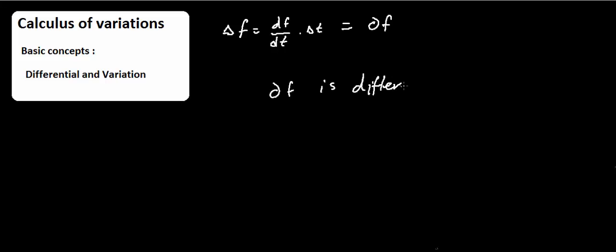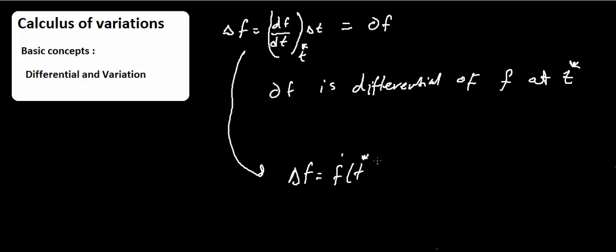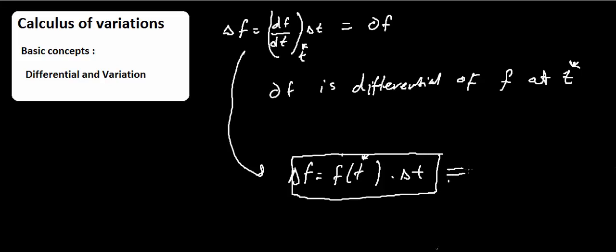This differential of function f at t* can be written as: df = f-dot(t*) · delta-t. This is called the differential of a function.